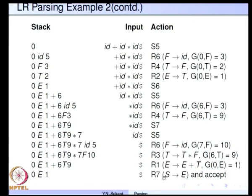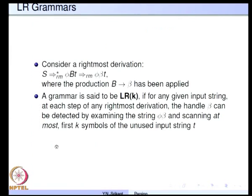The LR parser is essentially a shift-reduce parser; the actions are exactly the same. But at the time of reduction and push, we also push the state numbers onto the stack along with the terminal or non-terminal symbols. Now it is time to understand how to build the parser table, since we have seen the parser's operation given the table.